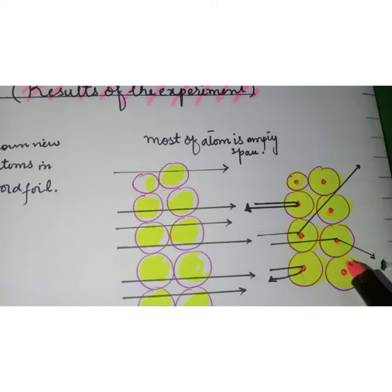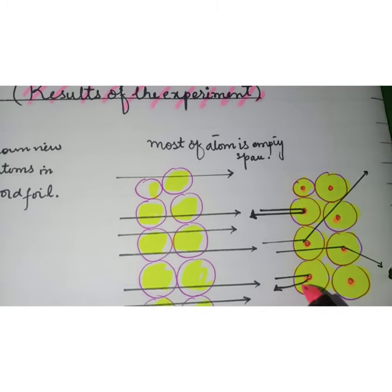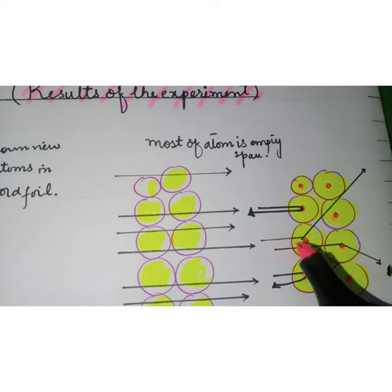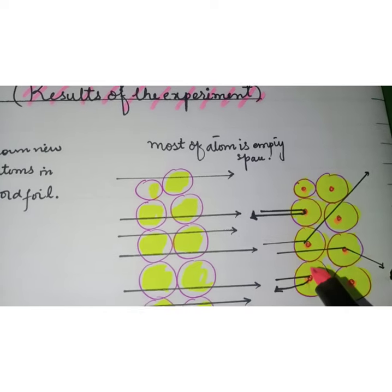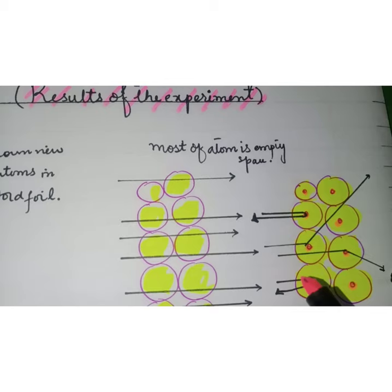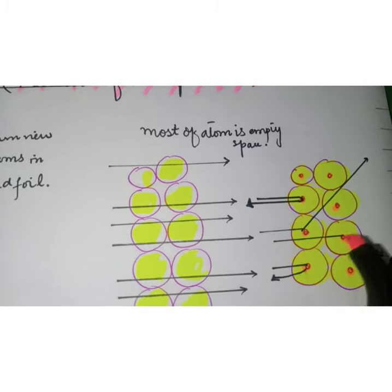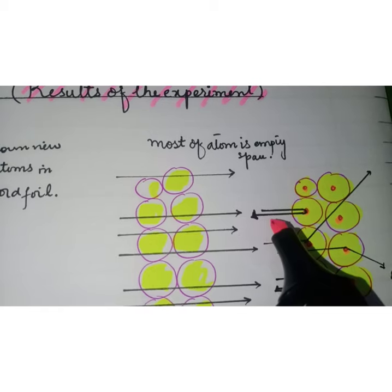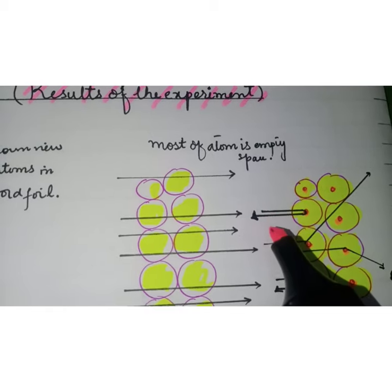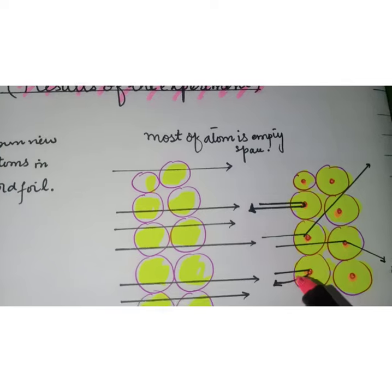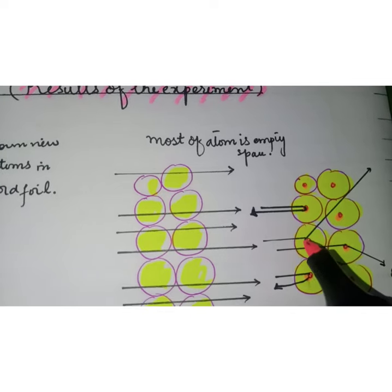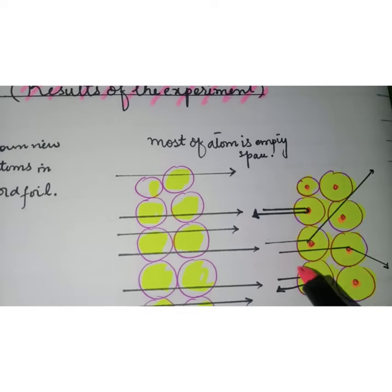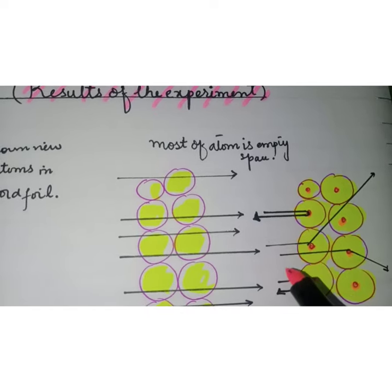The deflection of very few particles proves that there is a center of positive charges in an atom which is called the nucleus of an atom. The complete rebound of a few particles shows that the nucleus is very hard and dense. Since only a few particles deflected, it shows that the size of nucleus is very small compared to the rest of the total volume of an atom.